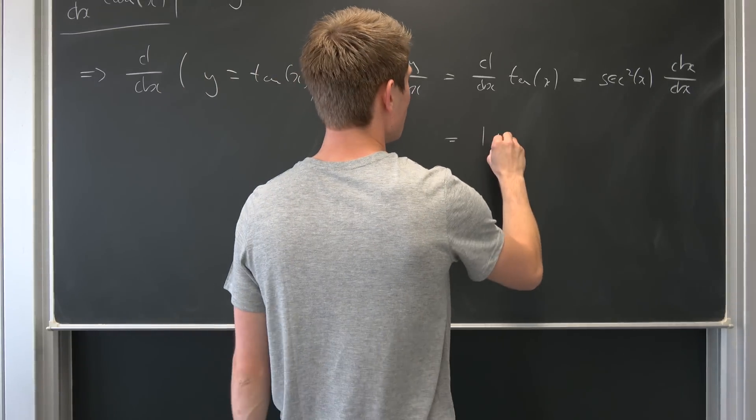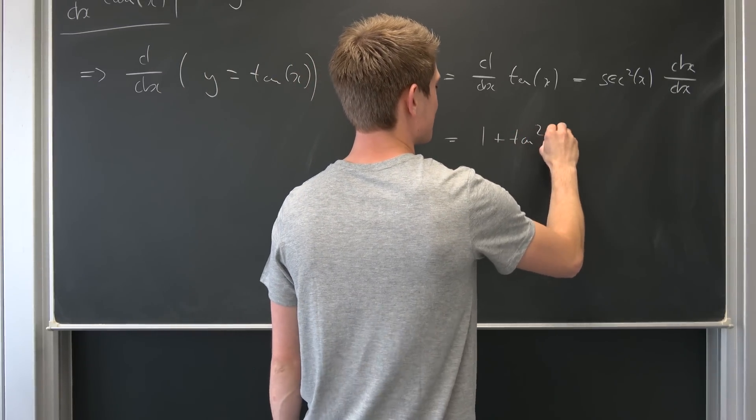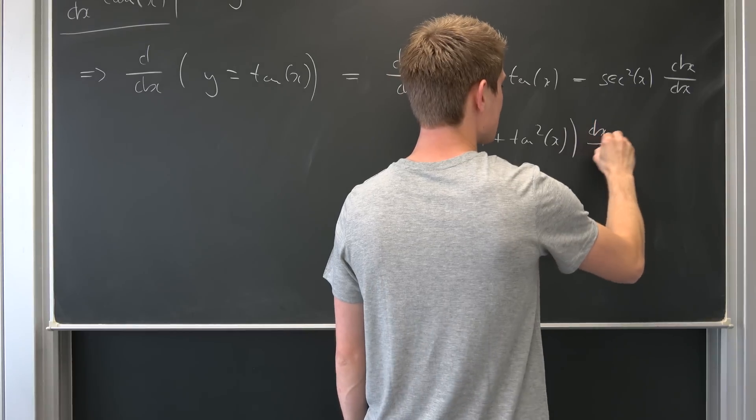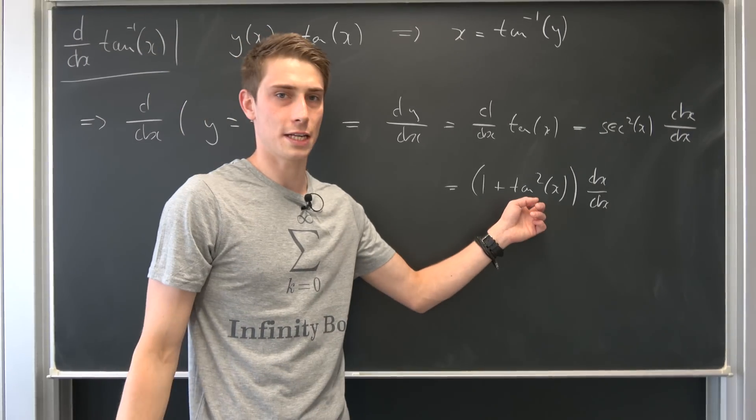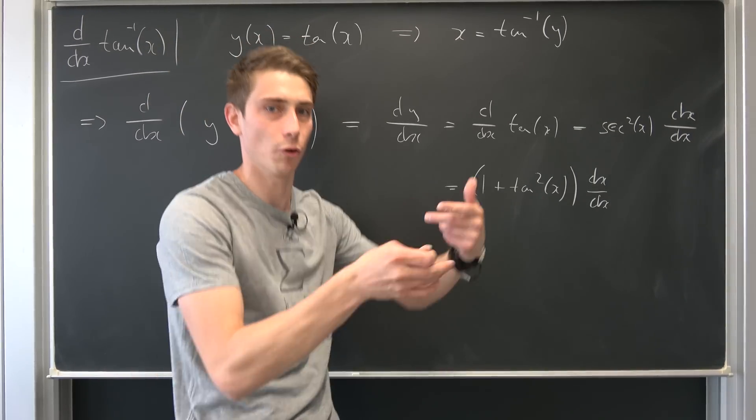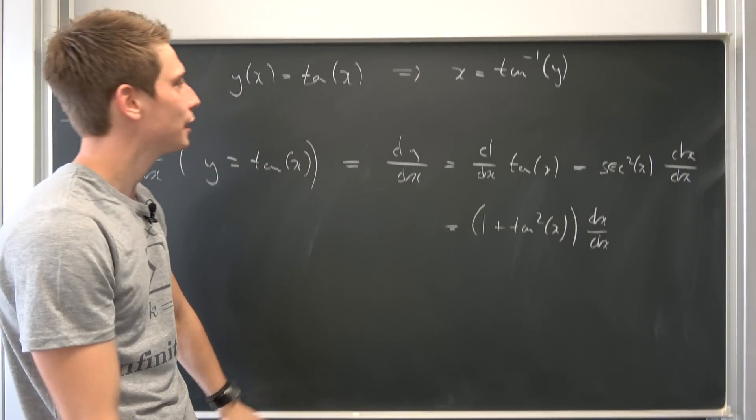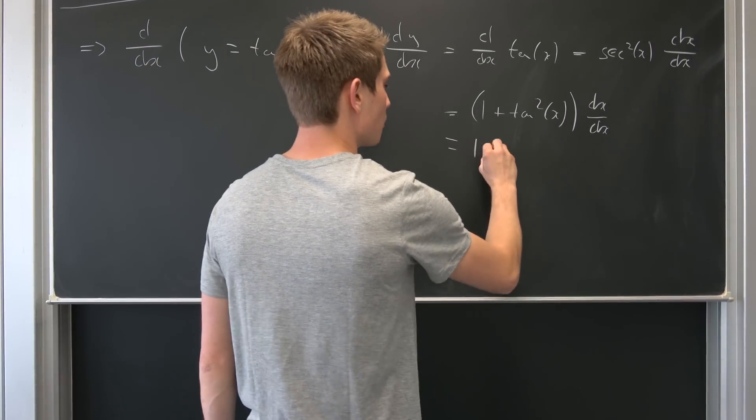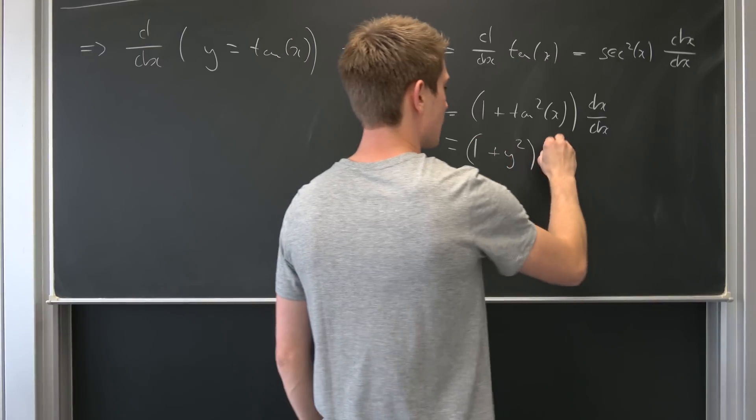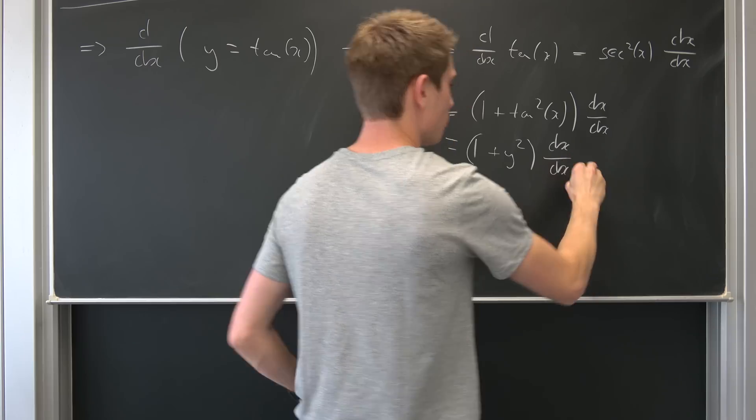So we end up with 1 plus tangent squared of x times dx over dx. But don't forget, tangent squared is nothing but tangent, but the whole thing squared. But what is our tangent? Tangent is nothing but y. So we can turn this right here into 1 plus y squared times dx over dx.